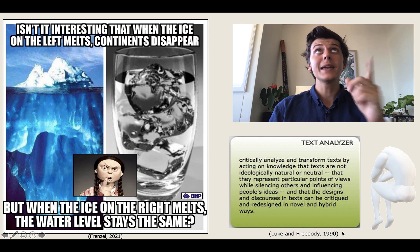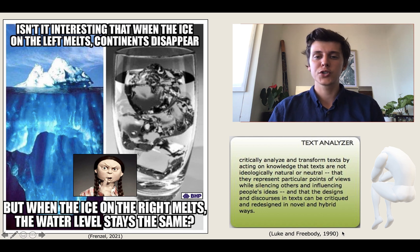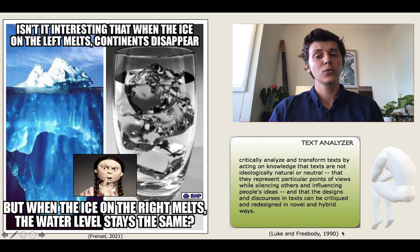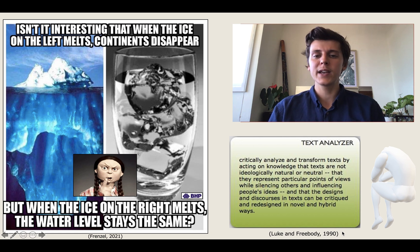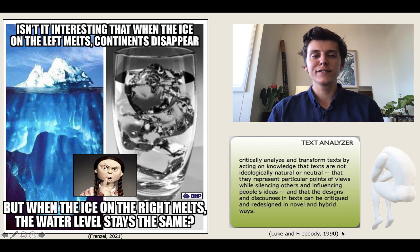Through the experiment in the meaning maker domain, students will come to the realization that the scientific point being made is actually true — melting icebergs will not raise sea level. However, land ice melting from global warming will. Therefore, there must be a reason that the author is misleading the reader. The intended destination for the students to arrive at is the hypothesis that BHP has authored this text as propaganda to mislead readers and that they have done this in the interests of their own business model.